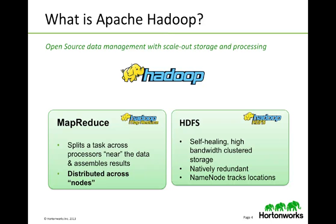Underlying Hadoop are two fundamental tools and applications. The Hadoop Distributed File System, HDFS, is a self-healing, high-bandwidth clustered storage. And then on top of that sits the compute ability — that is MapReduce. It's a framework that splits a task or a job across processes that are nearest to the data, and distributes that task across nodes.